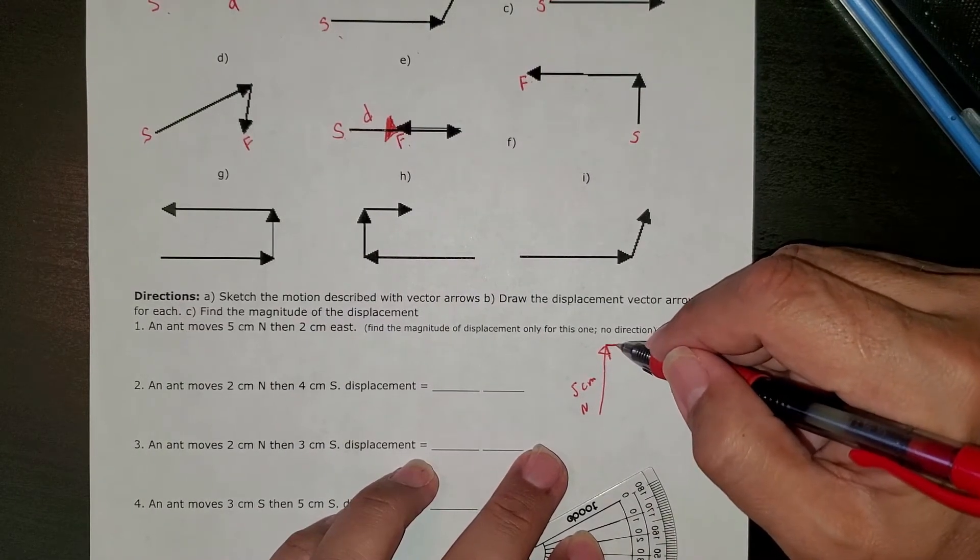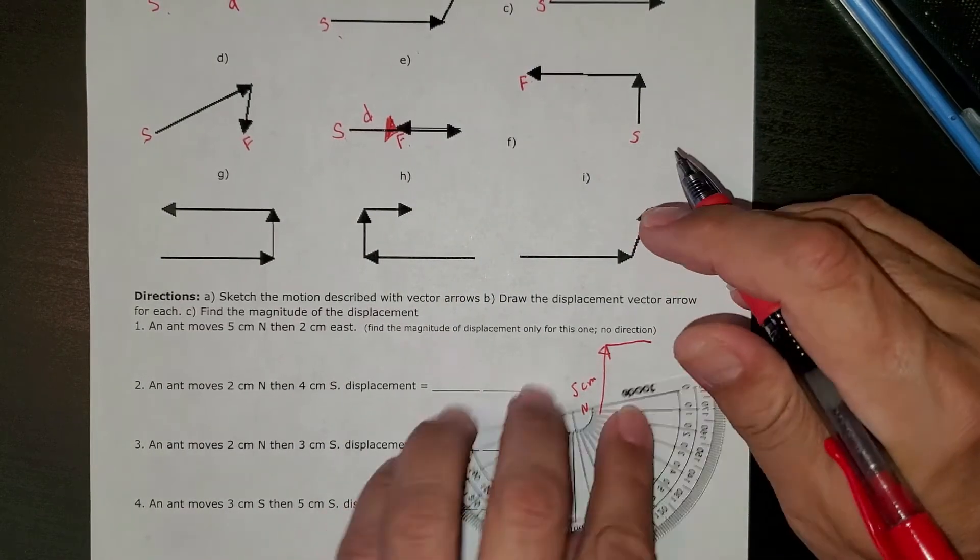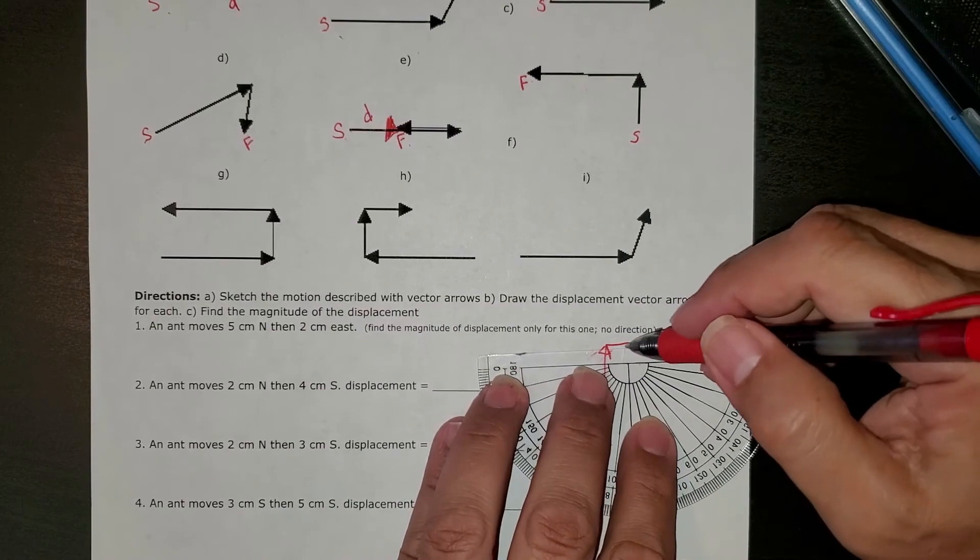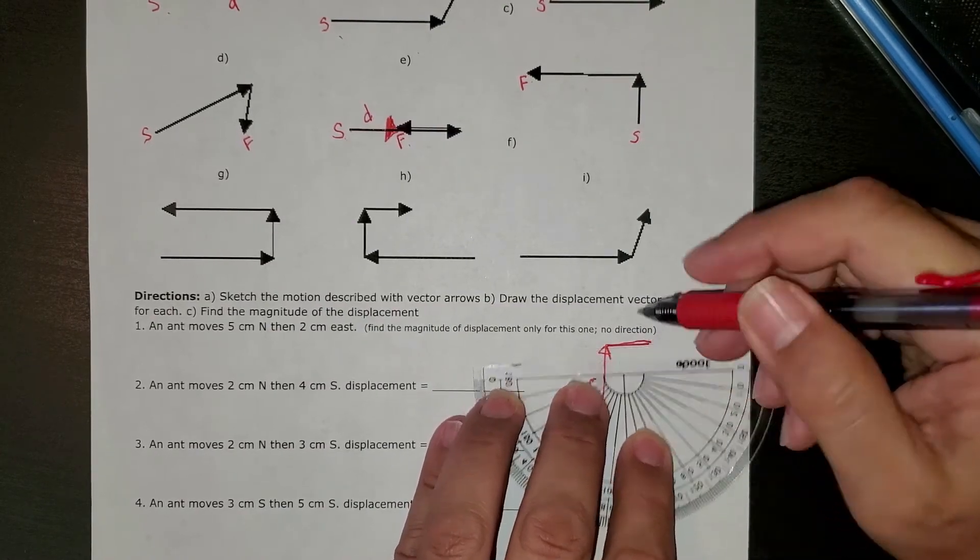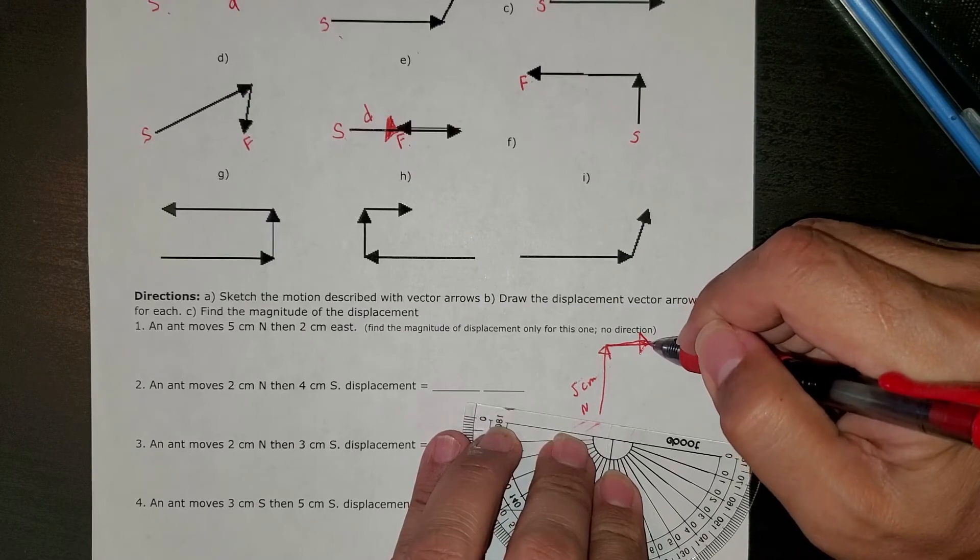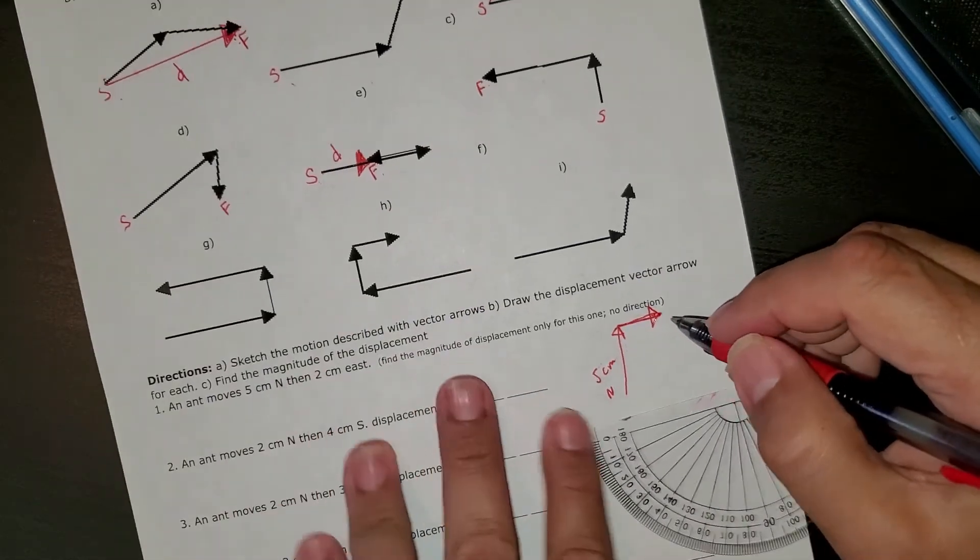And two centimeters east. Well, I really should at least use a ruler. That's pretty bad. That's about two centimeters, but you're going to use a ruler, right? Two centimeters east.